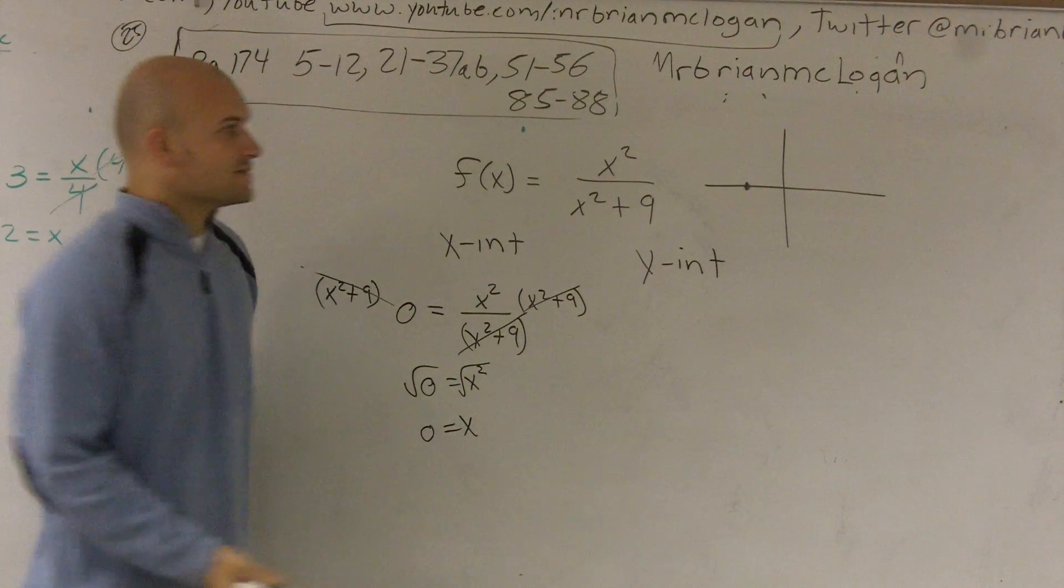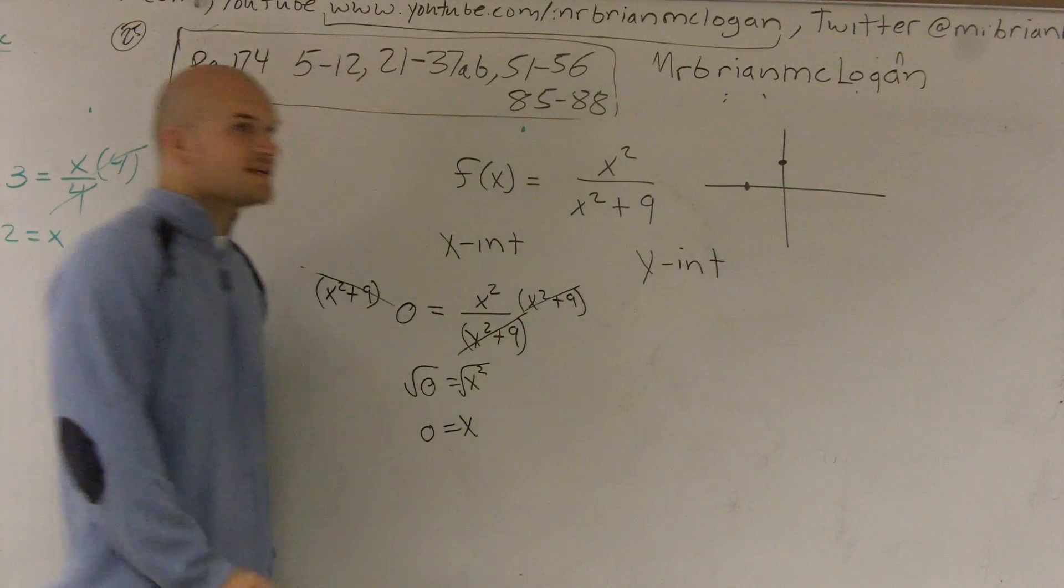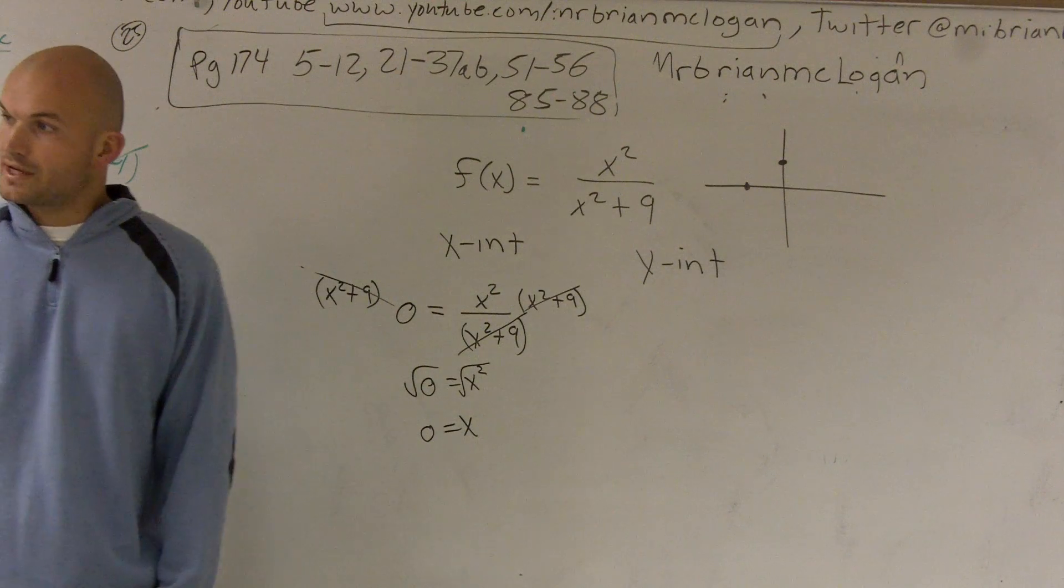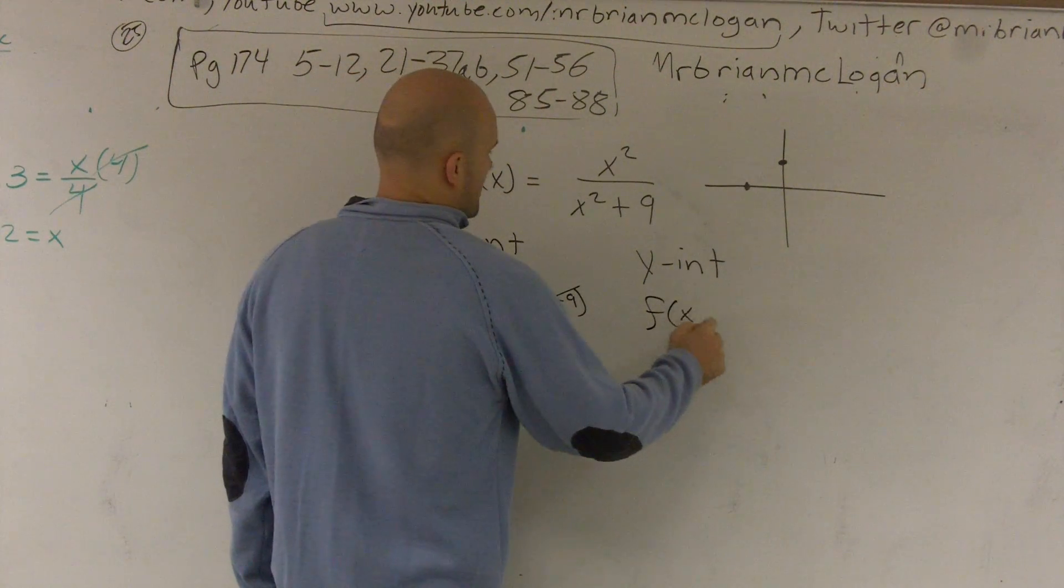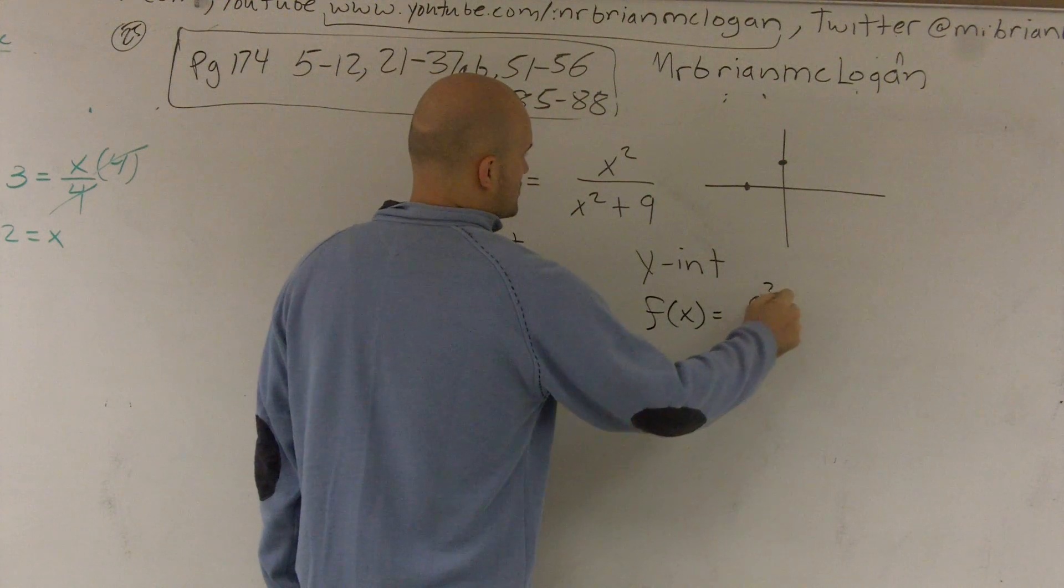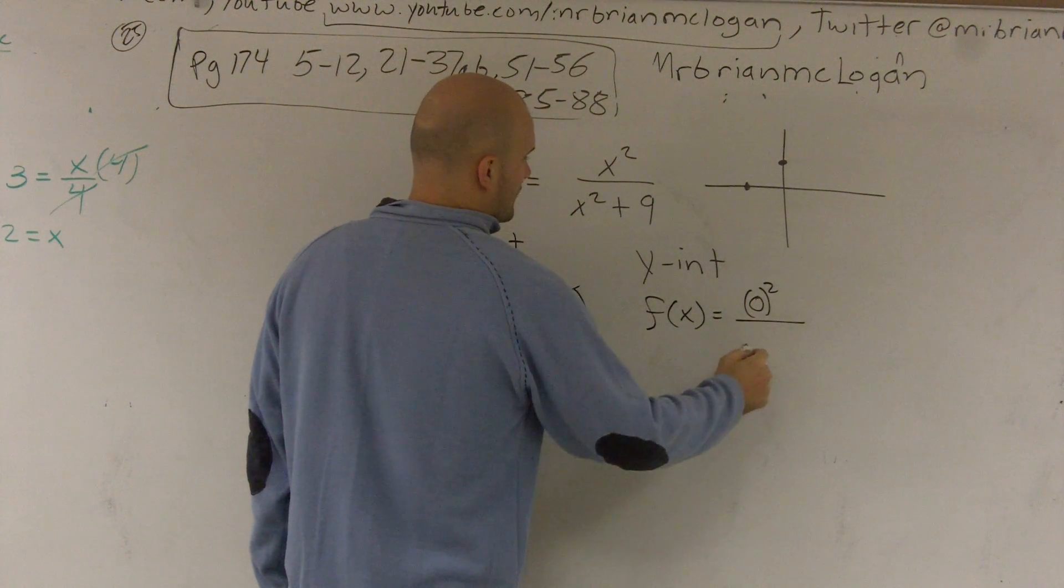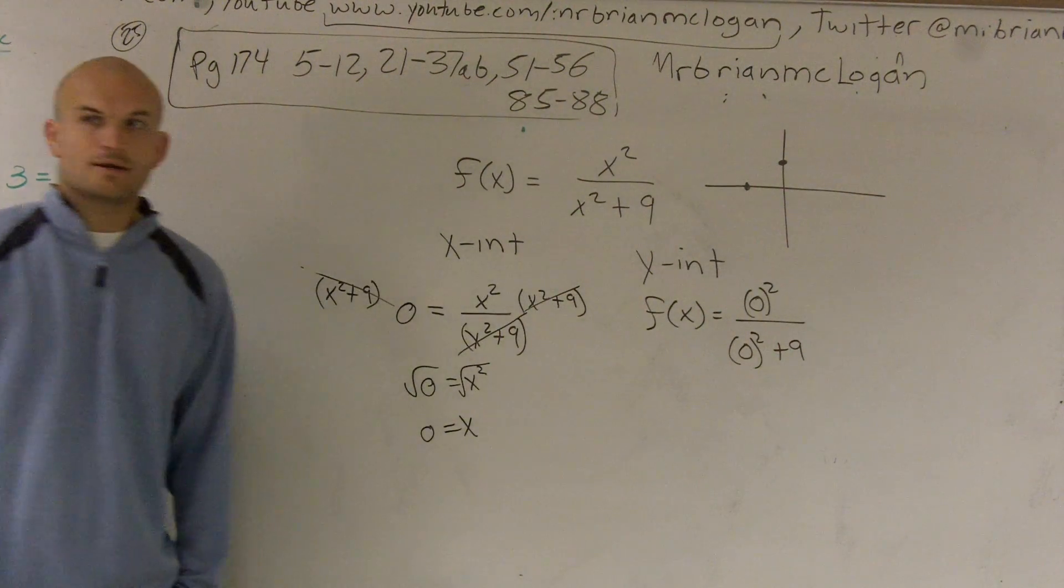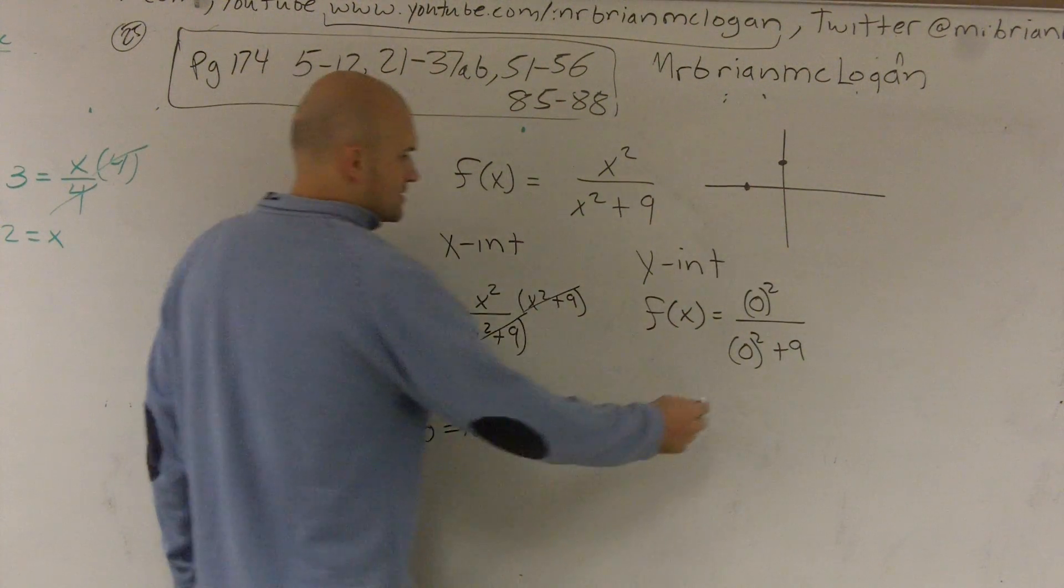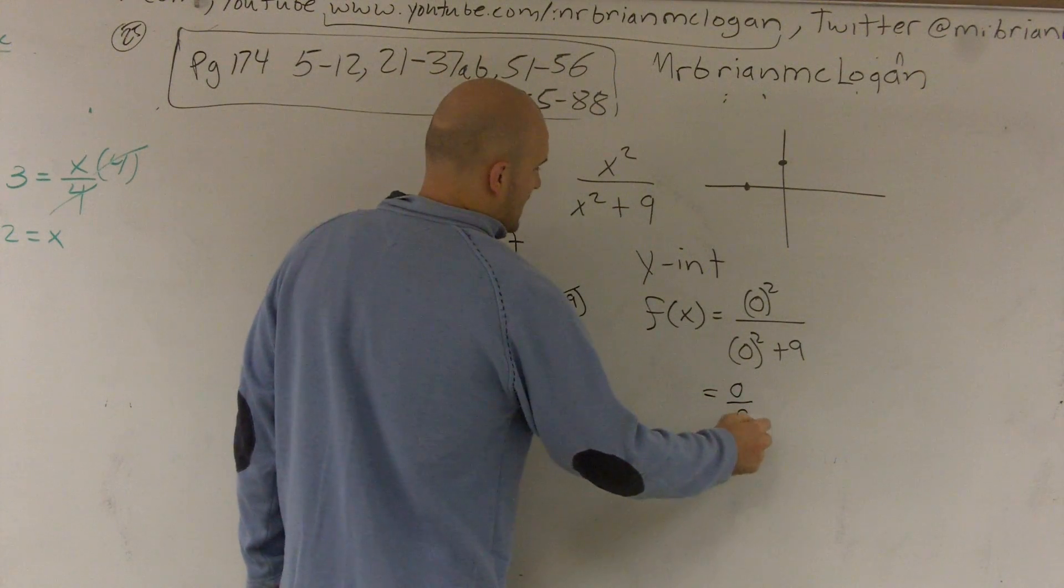Now, the y intercept is when my x value equals 0. So you're going to plug in 0 in for x. So I say f(x) equals 0 squared all over 0 squared plus 9, right? And what you guys will notice is this becomes 0 over 9.